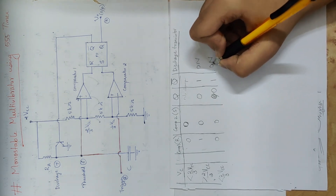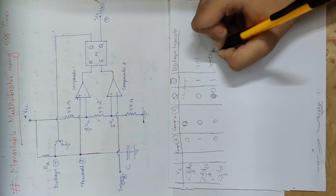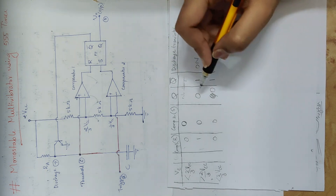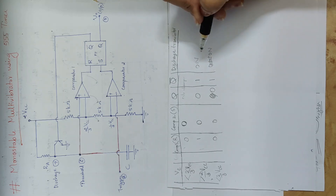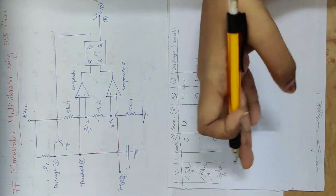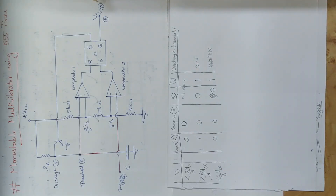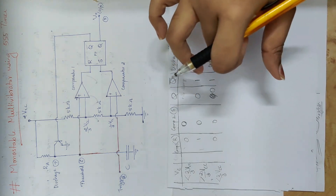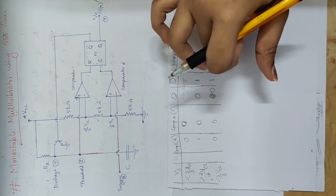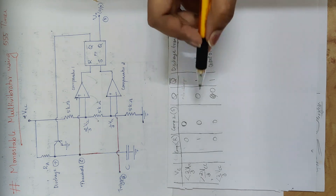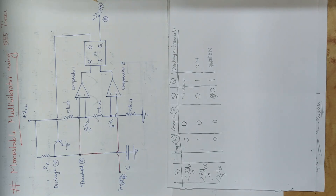The discharge transistor is on. No change state gives Q=0 and the discharge transistor remains on. This is the stable state condition where the voltage is less than 2/3 Vcc and the Q value is 0.